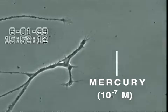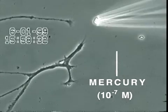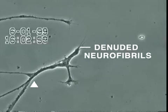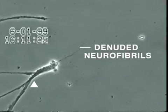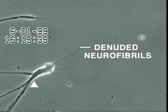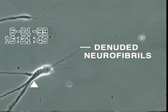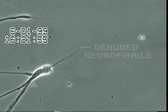Over the next 30 minutes, the neurite membrane underwent rapid degeneration, leaving behind the denuded neurofibrils seen here. In contrast, other heavy metals added at this same concentration, such as aluminum, lead, cadmium and manganese, did not produce this effect.